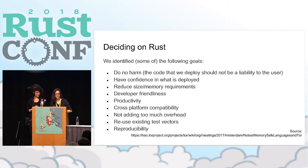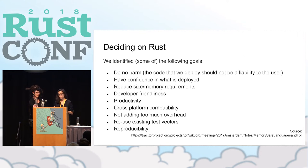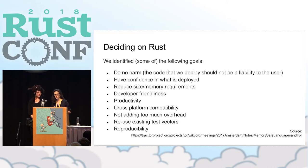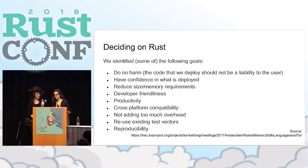We actually didn't start out saying we're going to go to Rust. Rust was the end of a long conversation about how do we start to use languages which are memory safe in Tor. We really want to protect end users. C is very challenging, very delicate and fragile, and so as much as we can, we wanted to do things that would protect end users and help prevent bugs.